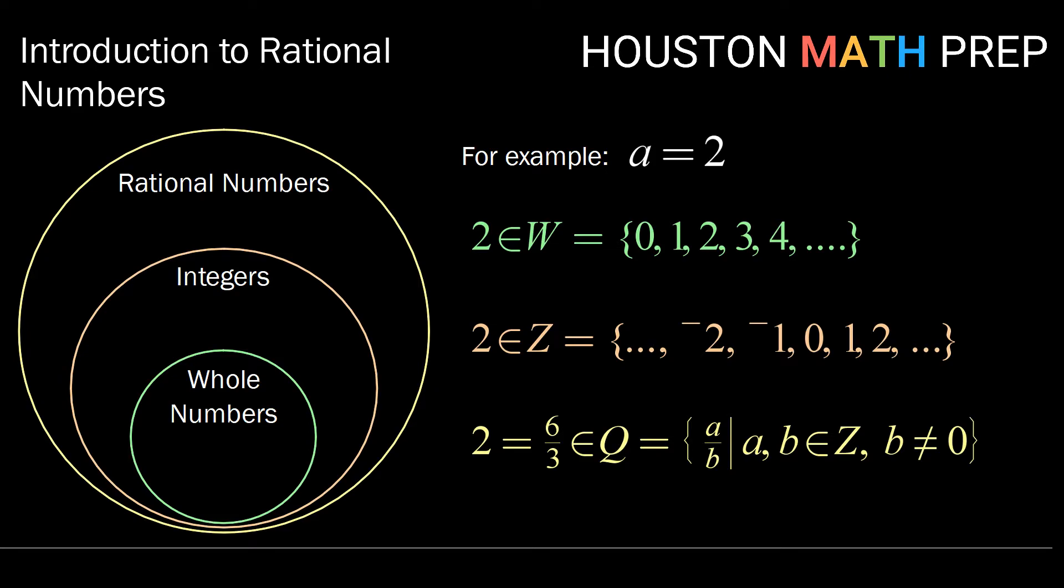which means two is, in fact, in the rational numbers. So if we were to place two in this diagram, we could place it down here. Two is a rational number and an integer and a whole number. So we place it in the center of all three.